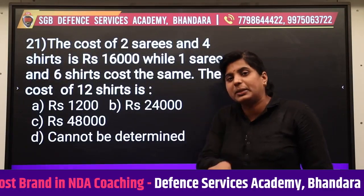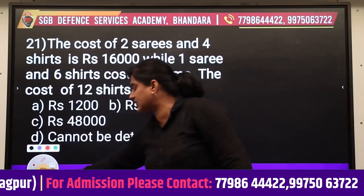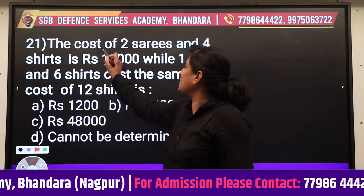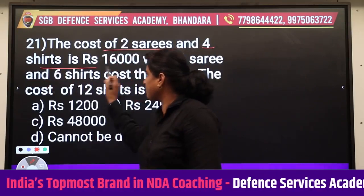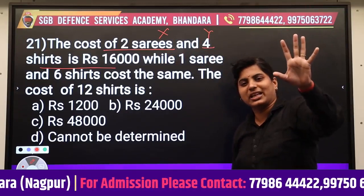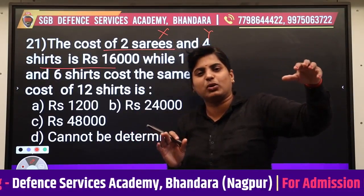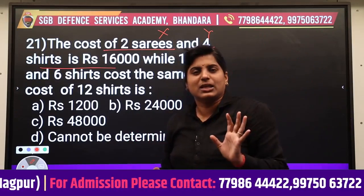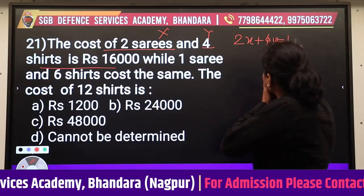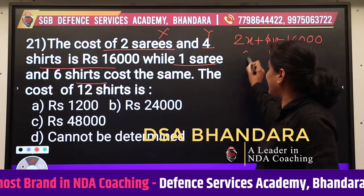Linear equation in two variables also applies to everyday shopping. Let sarees = x and shirts = y. Buying 2 sarees and 4 shirts costs ₹16,000, so equation 1 is 2x + 4y = 16,000. Buying 1 saree and 6 shirts also costs ₹16,000, so equation 2 is x + 6y = 16,000. Find the cost of 12 shirts.